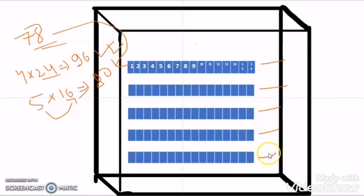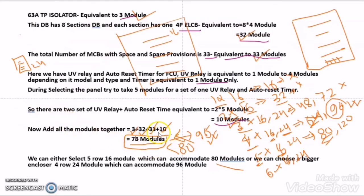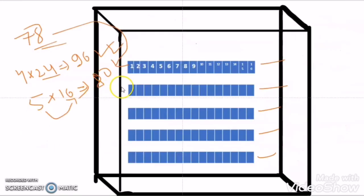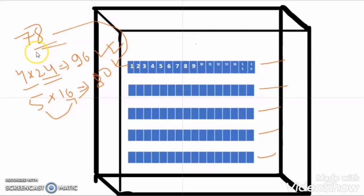I have selected a 5-row 16 module DB enclosure to accommodate my requirement of 78 modules. If there is a provision for future expansion, then you may choose the 4-row 24 module DB enclosure to accommodate 78 modules with more headroom.